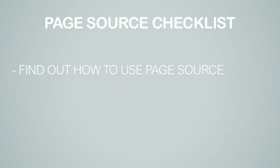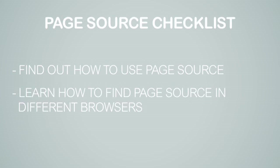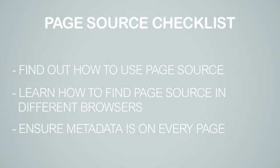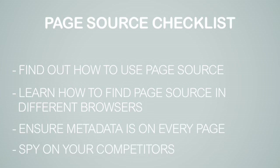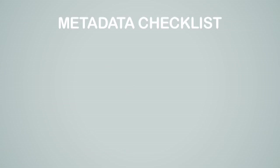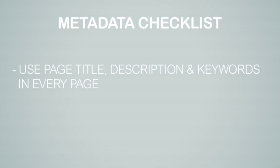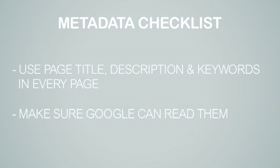Your checklist for PageSource: find out how to use PageSource and where to find it in different browsers so that when you're on a website — possibly your competitor's — you can find PageSource. Make sure that all your pages have metadata and don't be afraid to spy on your competitors, especially if they are Google's number one. Your metadata checklist: make sure you're using your page title, description, and keywords on every page, and that Google can read them via your admin system.